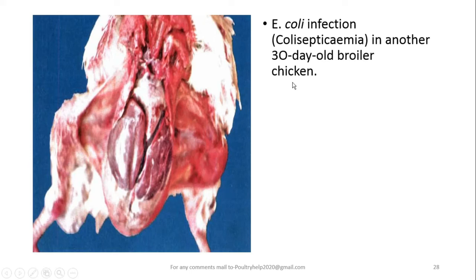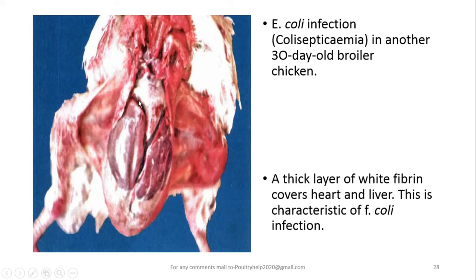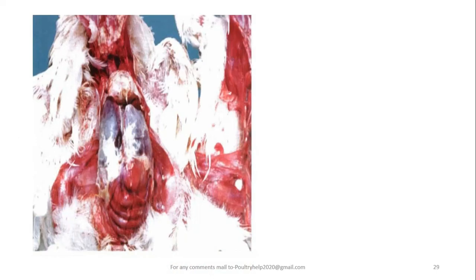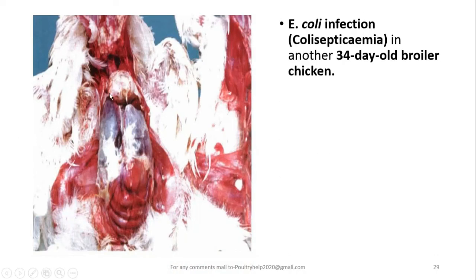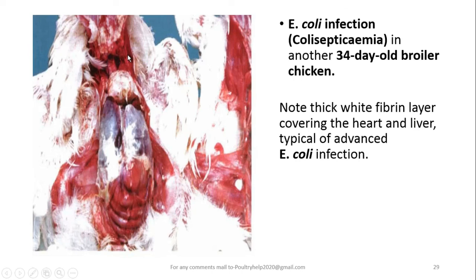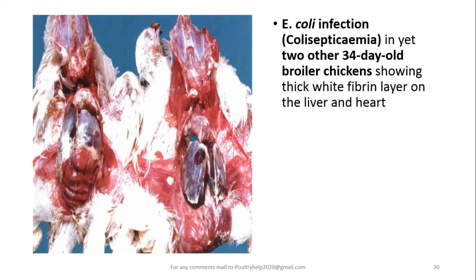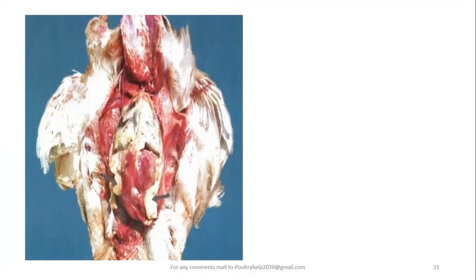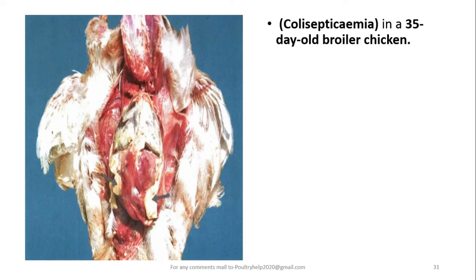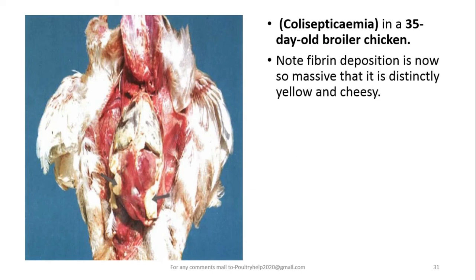In another 30-day-old broiler chicken the lesion is present, though less clear. In a 34-hour-old broiler chick, fibrin can be seen on the liver and heart. In the most advanced case — a 35-day-old broiler chicken — the yellow fibrin deposition is now massive. This massive fibrin deposition gives an easy-to-recognize leonine appearance.